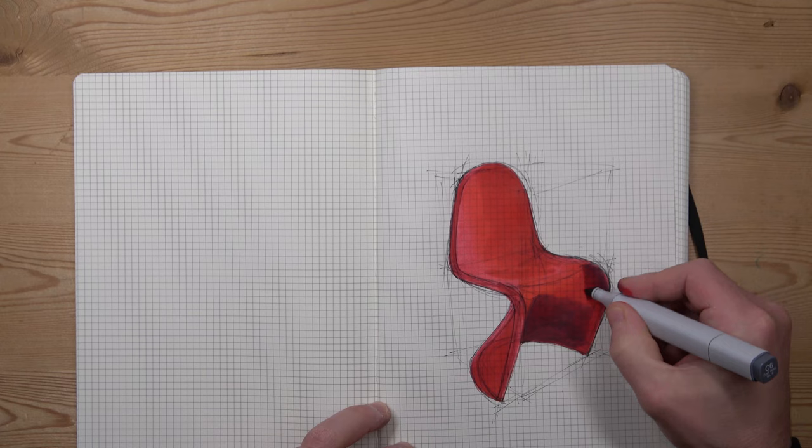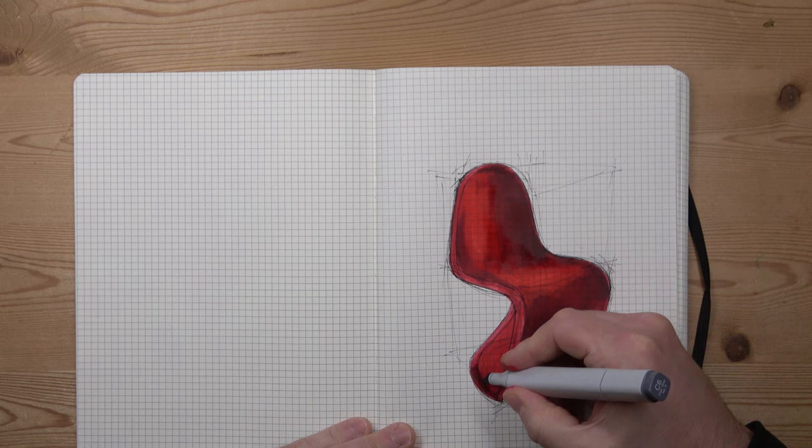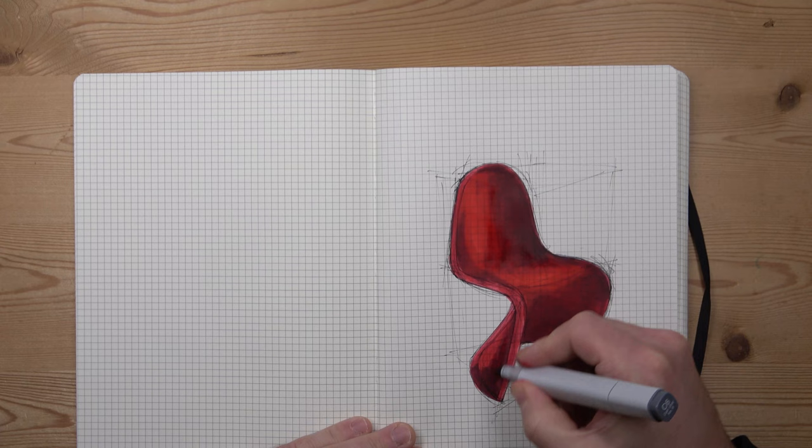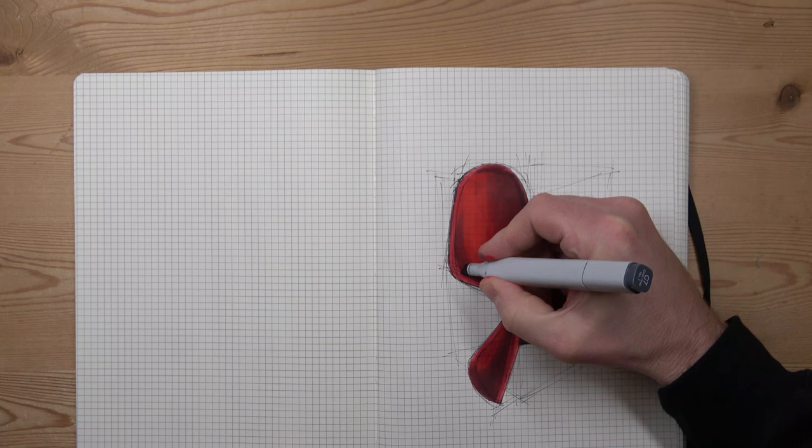Now a sketch works best when there's a good range of tones from light to dark. The broader the range, the more depth there is in a sketch. Depending upon the materials we're representing, we might even stretch our range of tones all the way from black to white.